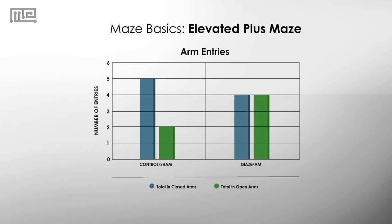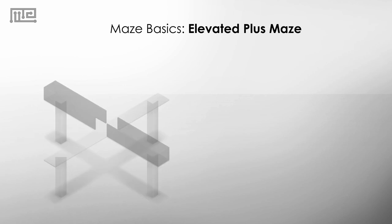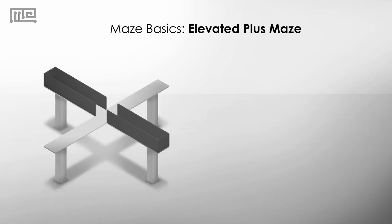When animals are treated with anxiety-reducing drugs, the number of entries into closed arms becomes much closer to the number of entries into the open arms. Similar results occur when looking at time spent in closed and open arms. The more anxiety-like feelings the animal experiences, the more reluctant it will be to explore the open areas of the maze.